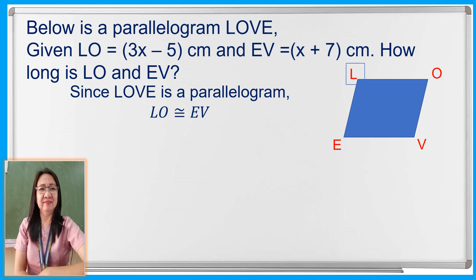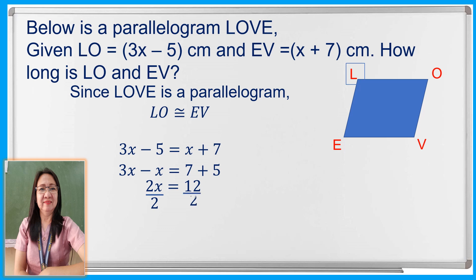We can solve it by equating the given measures by substitution. L-O is equal to 3x minus 5 and E-V is equal to x plus 7. By the addition property of equality, we obtain 3x minus x is equal to 7 plus 5. Then 2x equals 12, and dividing both sides by 2, we get x is equal to 6.